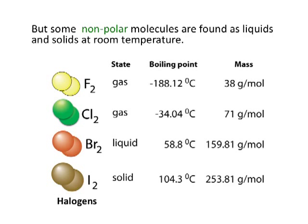But there are some non-polar molecules found at room temperature as liquids and solids. This is the halogens. As you go down the halogens, fluorine is a diatomic molecule that exists as a gas with a boiling point of minus 198.12 degrees. Chlorine, Cl2, is also a gas at room temperature but its boiling point is getting higher. When you get to bromine, Br2, it's actually found as a liquid at room temperature, with a boiling point of 58.8 degrees.